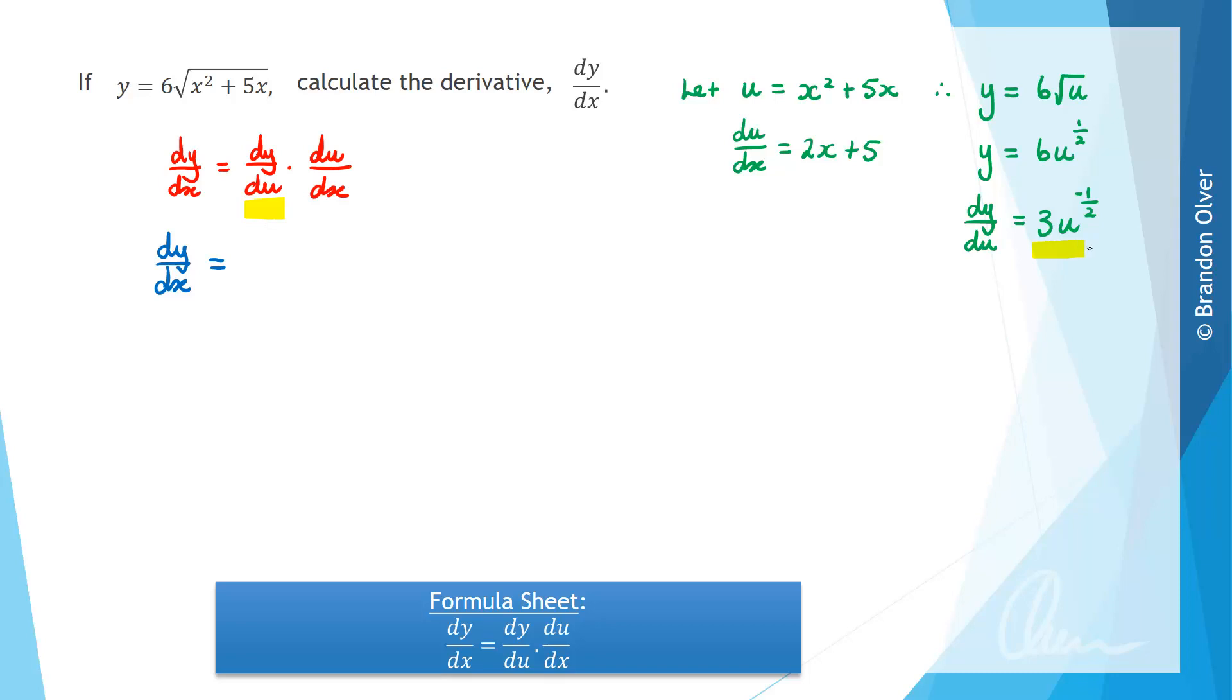So dy/du is this 3u to the power of negative 1 half. So in a bracket we're going to have 3 times u, however we can replace u with the expression that it's equal to, which is x squared plus 5x, and it will be to the power of negative 1 half, and then we multiply that by du/dx, which is this 2x plus 5. So in the second bracket we're going to have 2x plus 5.